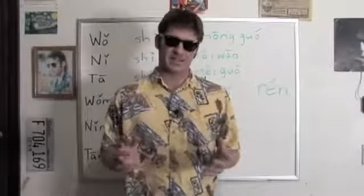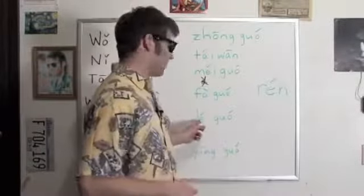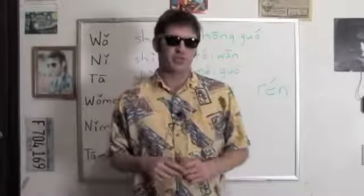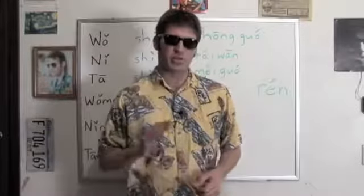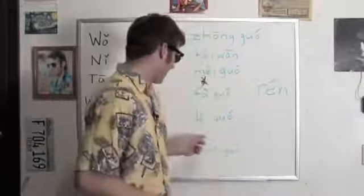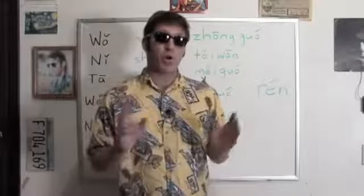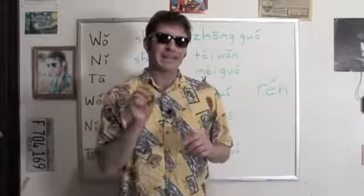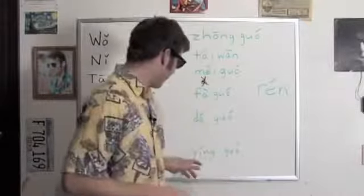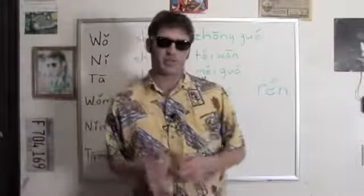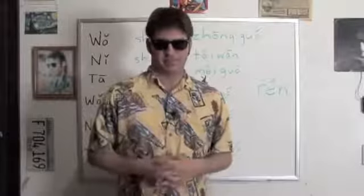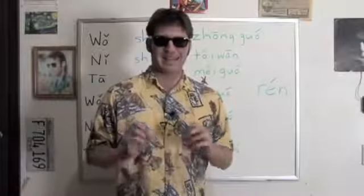法国 — that's France, with two second tones in a row, not easy to do. 德国 — Germany. And 英国 — not 英 with a flat sound, but 英 — the 'y' acts as a consonant. 英国, England.